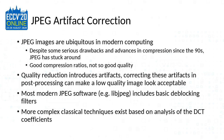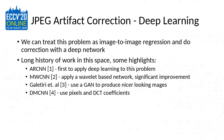Most modern JPEG software, including LibJPEG — the most commonly used compression and decompression code — includes at least some basic de-blocking filters, even though there are more complex classical techniques that involve analysis of the DCT coefficients. And of course, there are many deep learning methods for doing JPEG artifact correction as well.